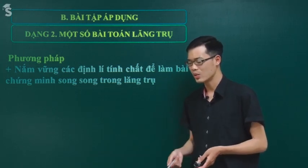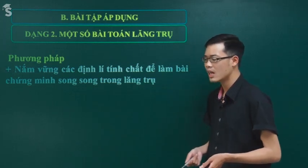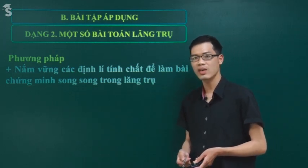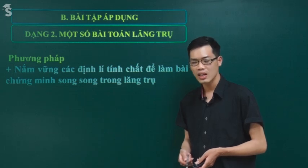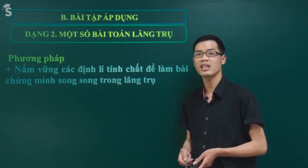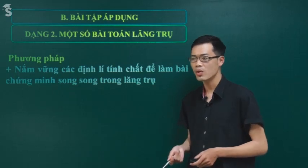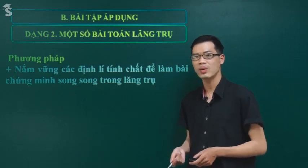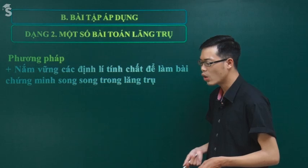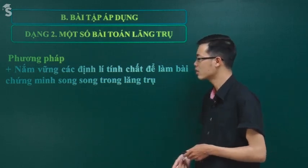Chúng ta chỉ cần chú ý là hình vẽ nó khác đi một tí thôi. Trong quá trình làm, các em cố gắng để ý xem người ta nói là vẽ lăng trụ đứng hay lăng trụ xiên. Lăng trụ đứng người ta vẽ cạnh bên vuông góc với đáy thẳng đứng. Còn lăng trụ xiên người ta vẽ chéo đi. Còn nếu người ta cho hình hộp hay hình lập phương thì các em có thể tự vẽ được.